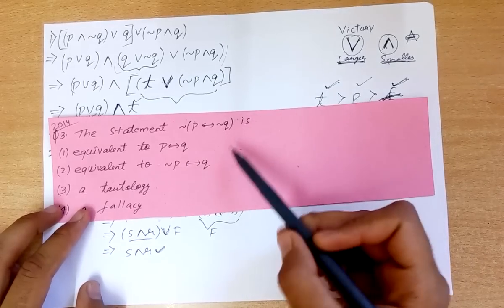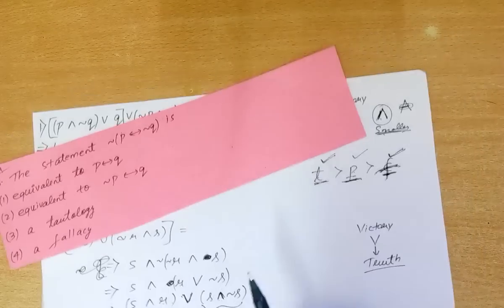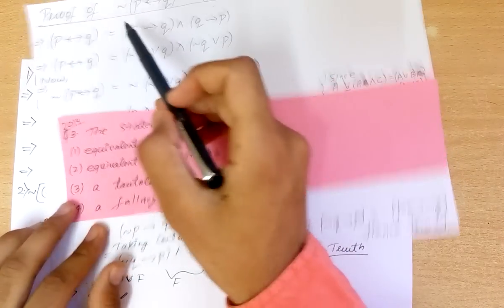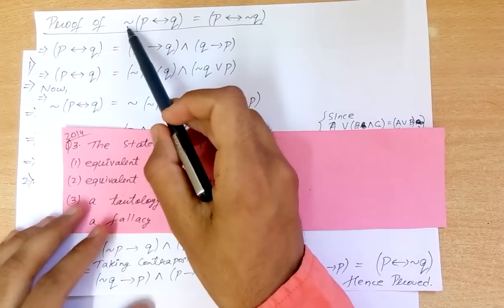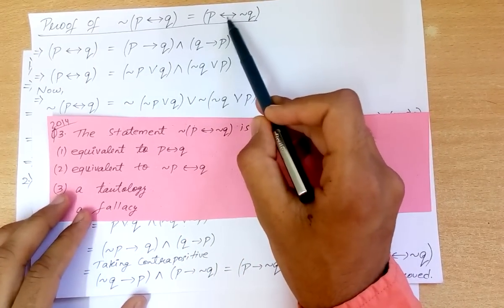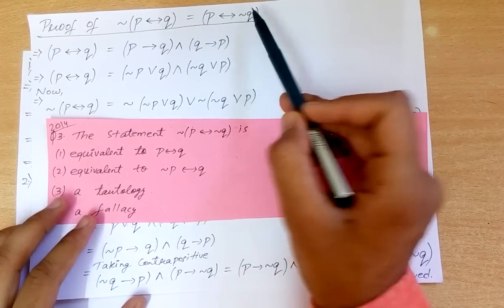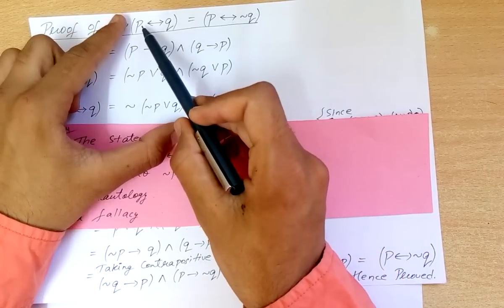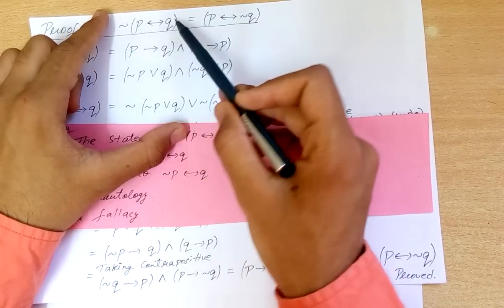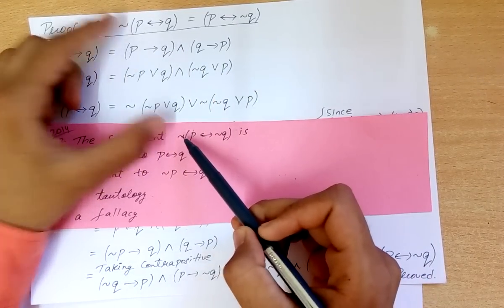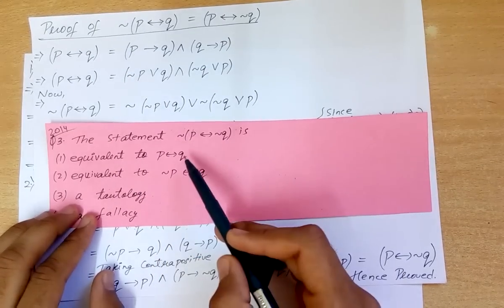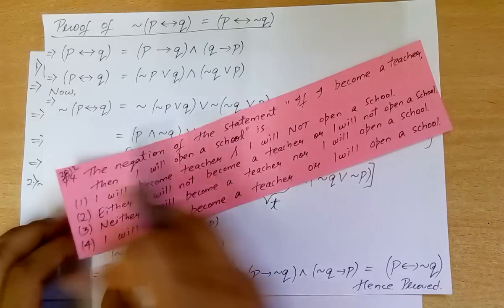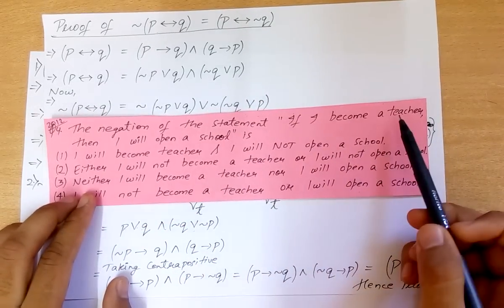Question three: the statement negation of (P if and only if negation of Q). We just proved that negation of (P if and only if Q) equals P if and only if negation of Q. Taking it the other way, P if and only if negation of Q equals negation of (P if and only if Q). With two negations applied, it becomes positive, so the answer is P if and only if Q.